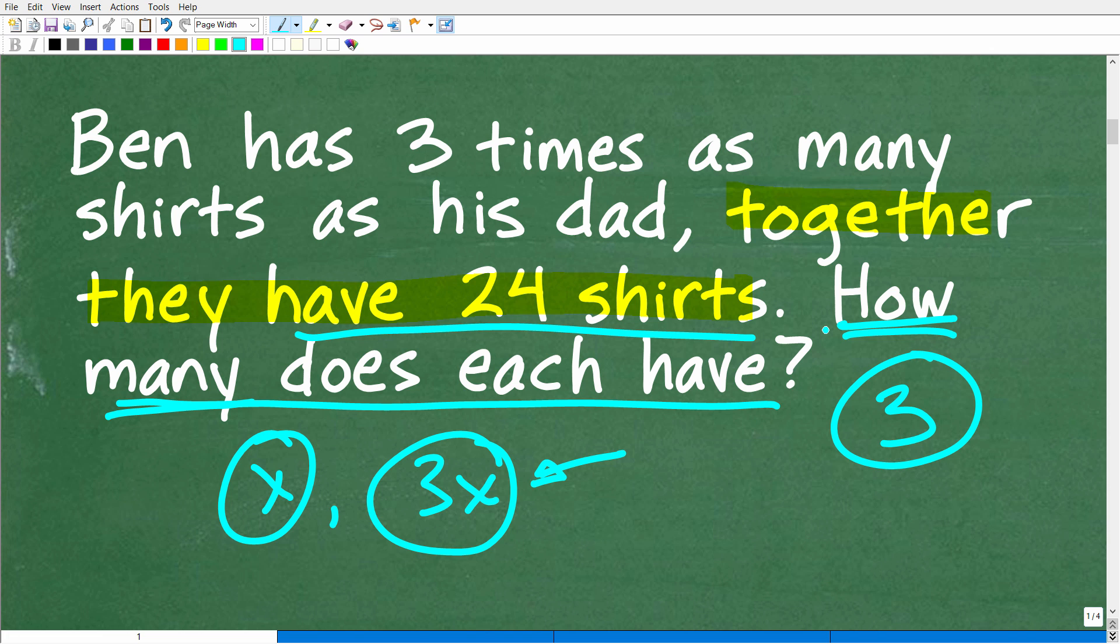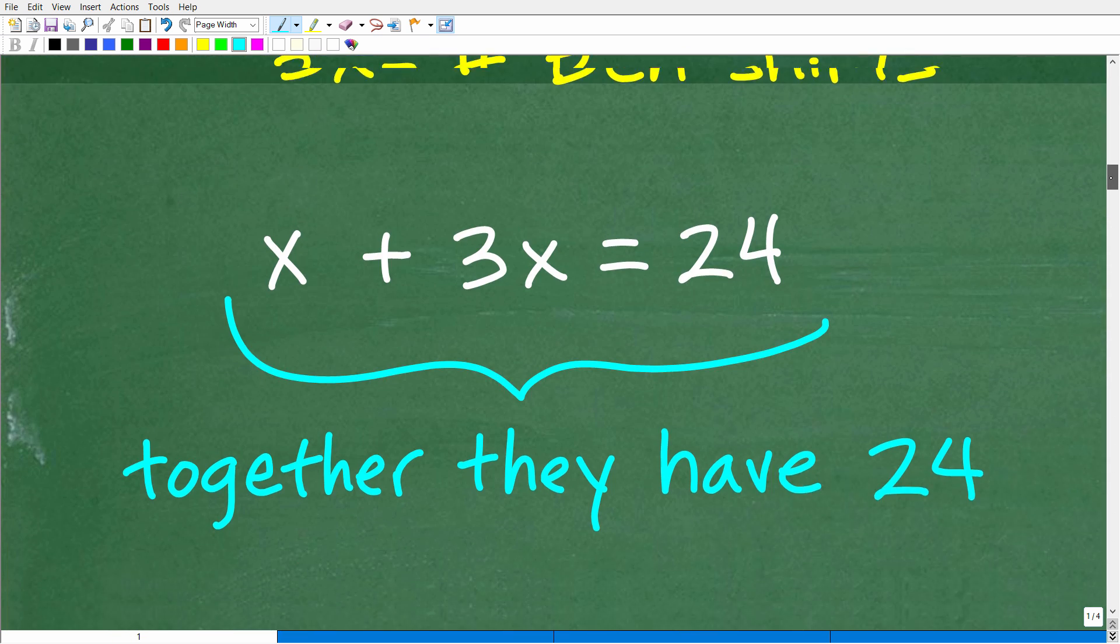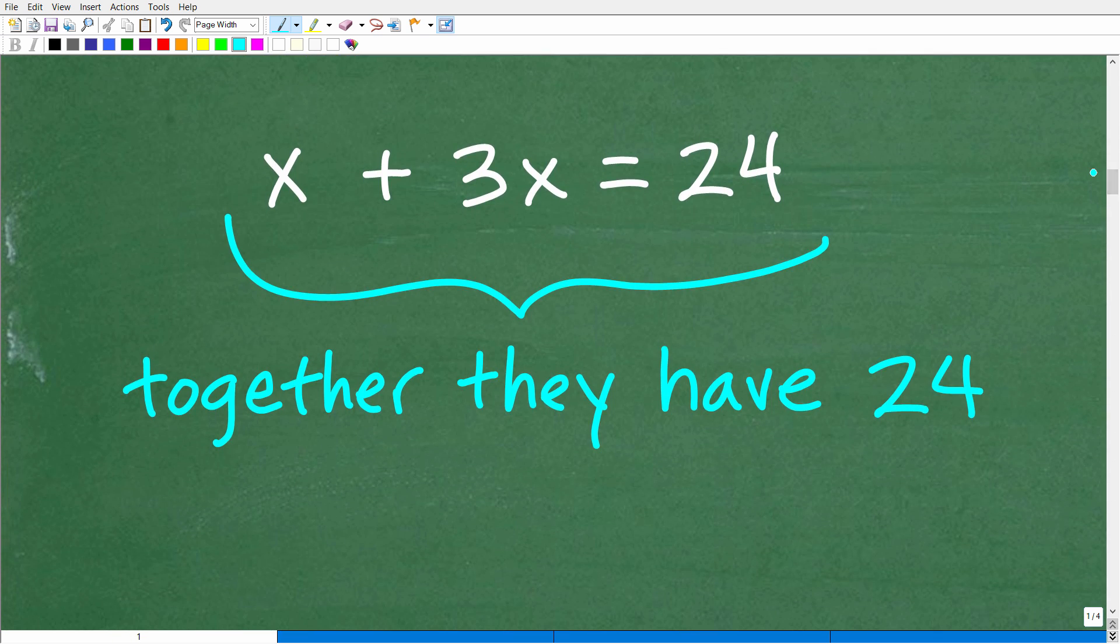And of course this is going to be very easy because we have this part of the problem. Together they have 24 shirts. So if this is the number of shirts the dad has, this is the number of shirts Ben has, and together they have 24 shirts, well hopefully this is pretty easy to see that we can build a lovely equation right here. So X plus 3X is equal to 24. Again, X is the number of shirts that dad has. 3X is Ben's shirts. So X plus 3X is 24. And at this point we have a simple linear algebraic equation. So we're going to go ahead and take the next step, which is to solve this basic equation for X. And then of course the answer will be apparent.